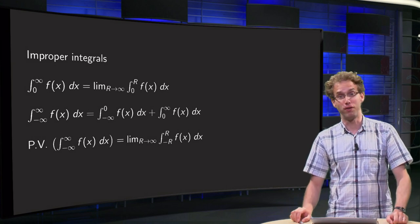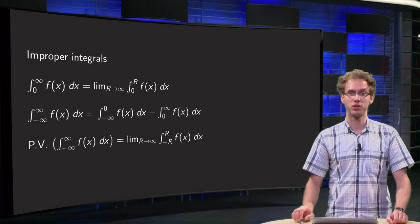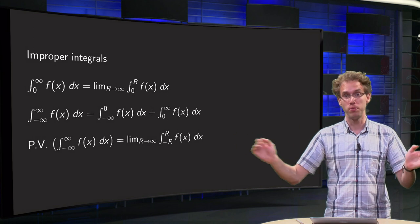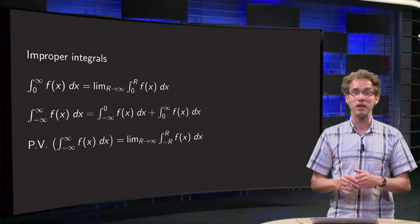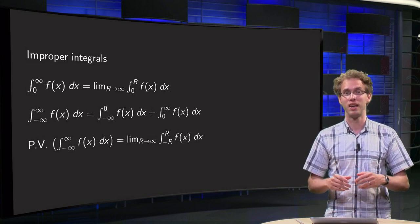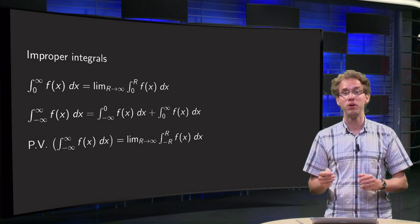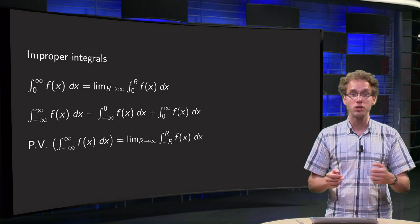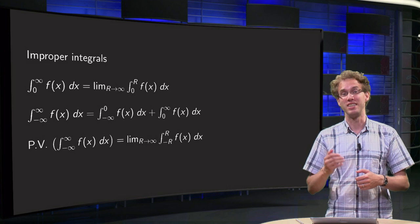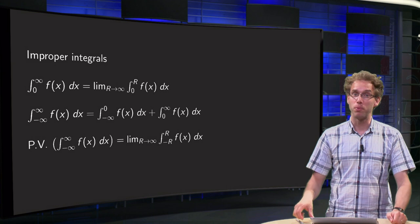We can use complex functions to evaluate a lot of real, improper integrals — real integrals from 0 to infinity, or from minus infinity to plus infinity. Our complex integrals will give us the so-called principal value of the real integrals. In this video you will learn what is meant by this principal value, and you will also see two important theorems that tell us when this principal value is the same as the real integral.